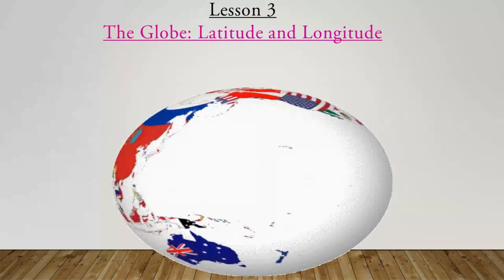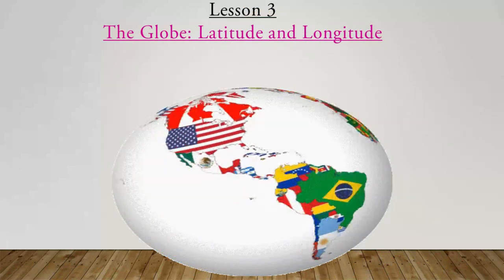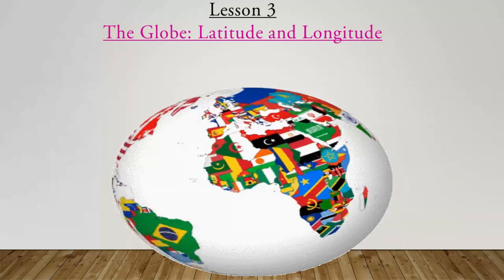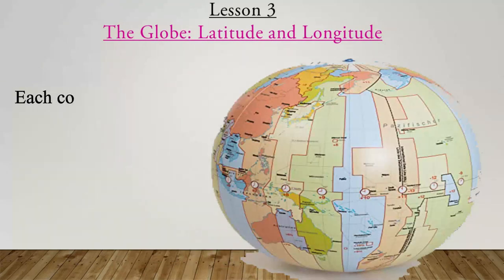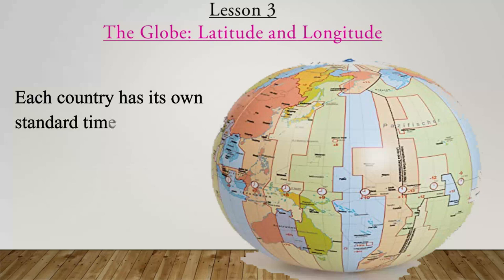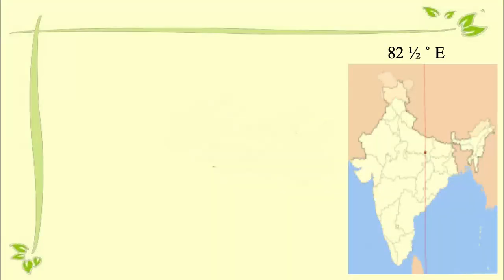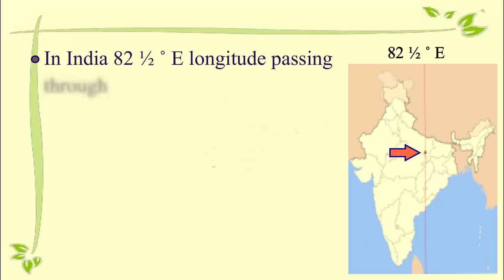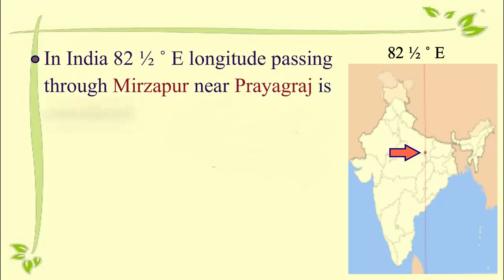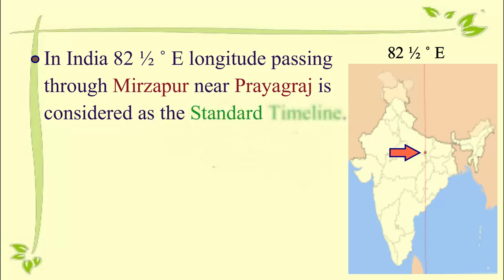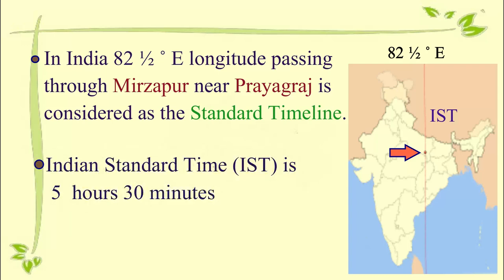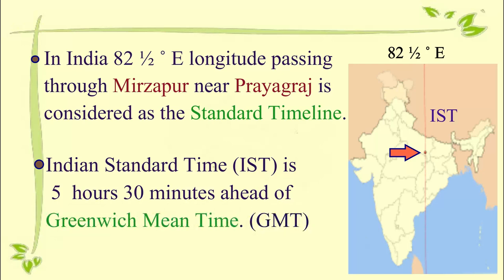There is a difference in the local time of places located on different lines of longitude. Har country ki apni standard timeline ya standard meridian hai. Aur is meridian ka local time us country ka standard timeline hota hai. Eighty-two and a half degree east longitude passing through Mirzapur near Prayagraj is considered as the standard timeline. It is 5 hours 30 minutes ahead of Greenwich mean time.